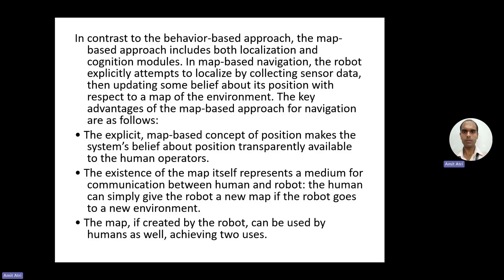The key advantages of the map-based approach for navigation are as follows. First, the explicit map-based content of the position makes the system's belief about position transparently available to the human operator. Second, the existence of the map itself presents a medium for communication between human and robot. The human can simply give the robot a new map if the robot goes to a new environment.